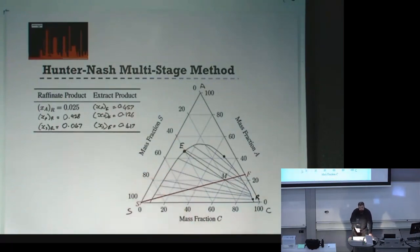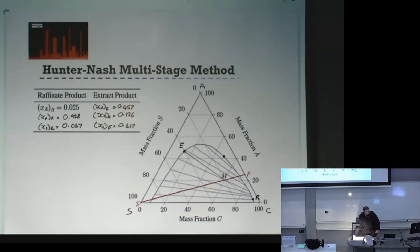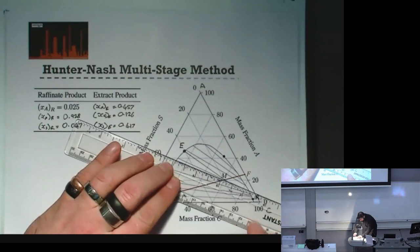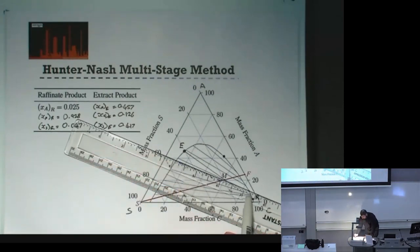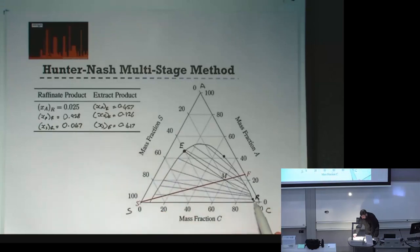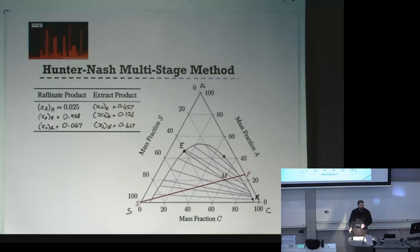We can see that because we now have this multi-stage system, we actually have a much better separation than when we used the one-stage system. Instead of having our product defined by the original tie line, we've increased the amount of A in our extract and reduced the amount of solute in our raffinate product — we've made the separation better by going from single-stage to multi-stage.